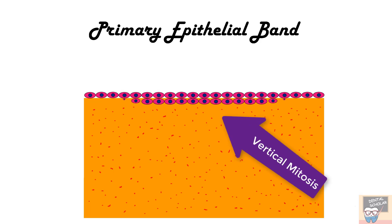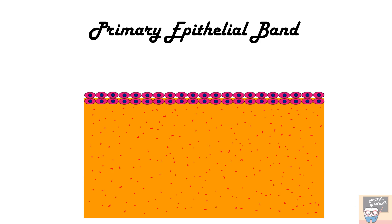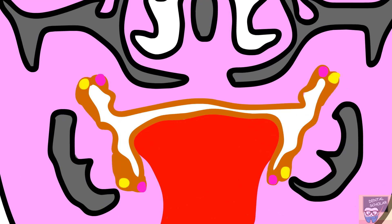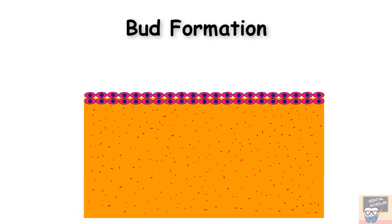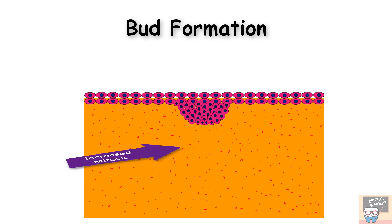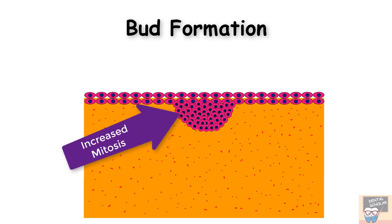This vertical mitosis leads to formation of the dental lamina on the lingual side and vestibular lamina on the buccal side. As seen in this animation, the epithelial band (brown) proliferates into a lingual dental lamina (pink) and a buccal vestibular lamina (yellow). Once the dental lamina is established by the 8th week of intrauterine life, the rate of mitosis increases at localized places corresponding to the 20 primary teeth.